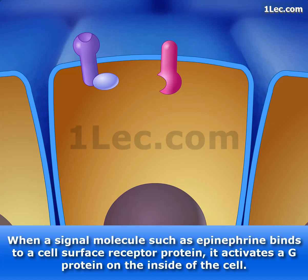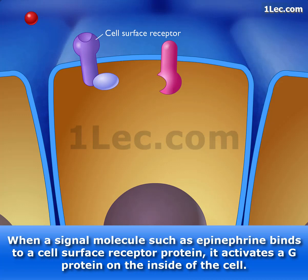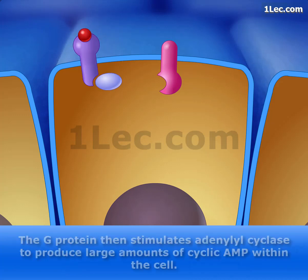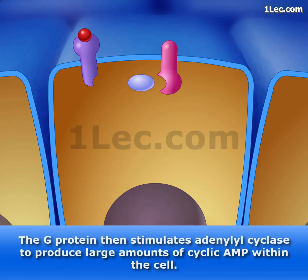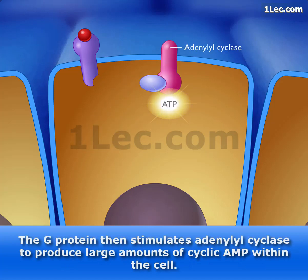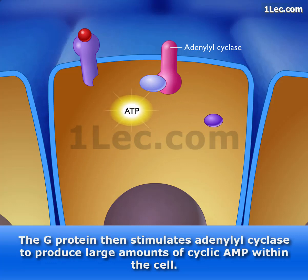When a signal molecule, such as epinephrine, binds to a cell surface receptor protein, it activates a G-protein on the inside of the cell. The G-protein then stimulates adenylyl cyclase to produce large amounts of cyclic AMP within the cell.